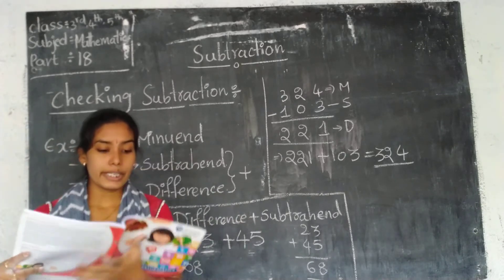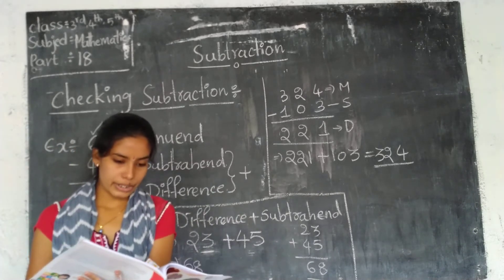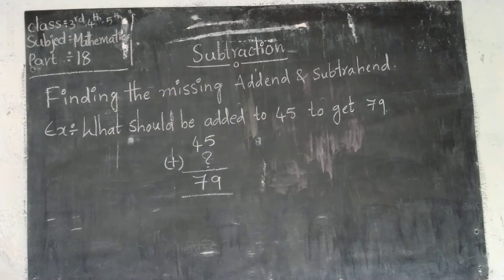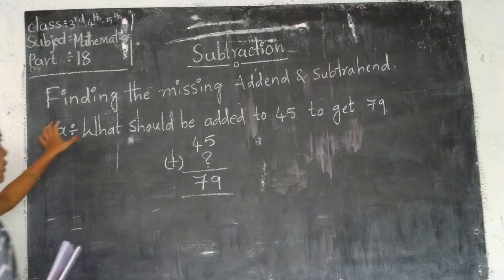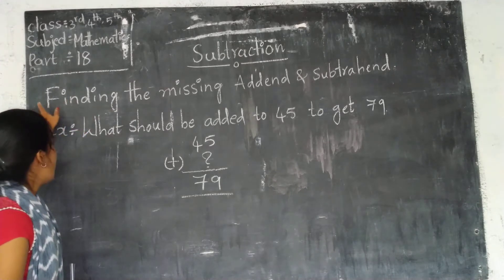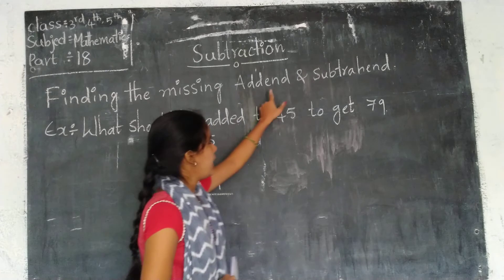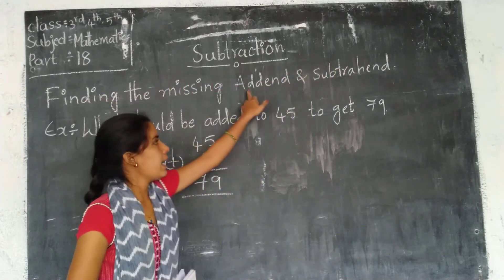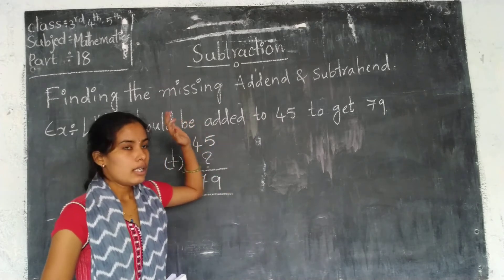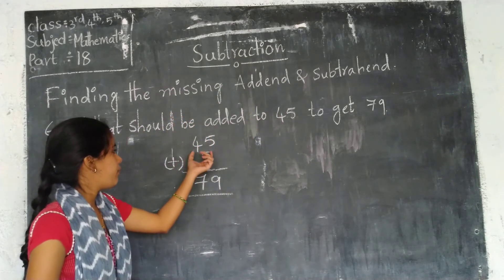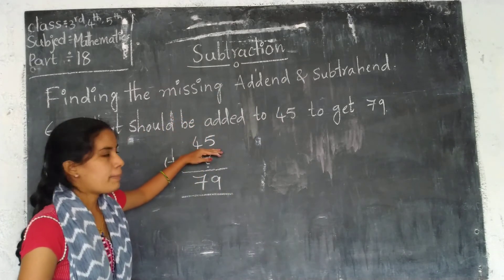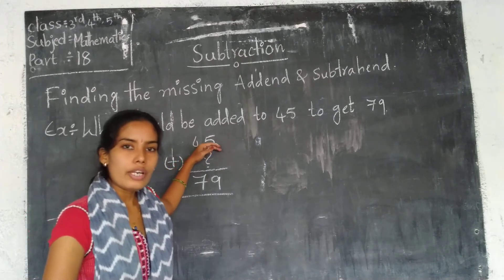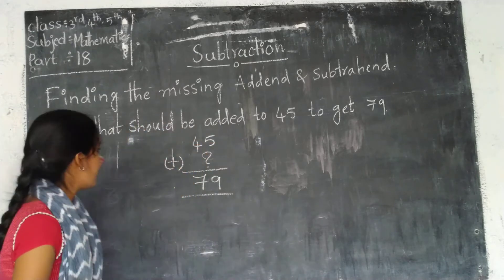This is about checking of subtraction. And now one more important topic: finding the missing addend in subtraction. In these problems, one addend or the sum is given. How can we find the missing addend?